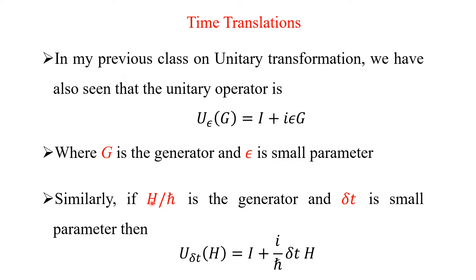Similarly, if H/ℏ (the Hamiltonian over h-bar) is the generator and delta-t is the small parameter, then the unitary operator U(delta-t), as a function of H, is equal to the unit operator plus (i/ℏ)·delta-t·H. Here px/ℏ is the generator and epsilon is the small parameter. So U(delta-t, H) is defined as the unit operator I plus (i/ℏ)·delta-t·H.